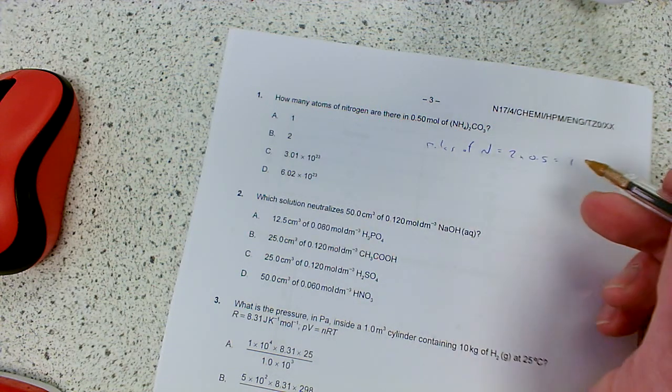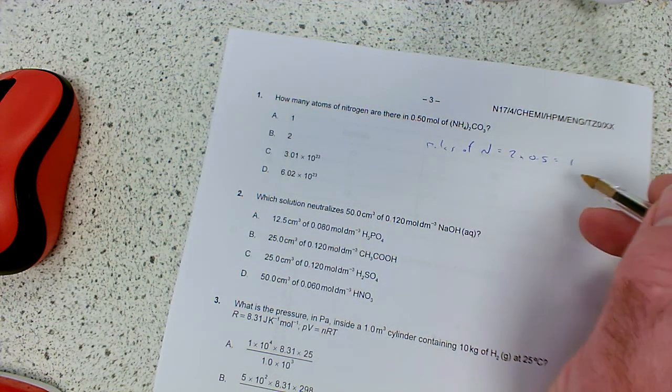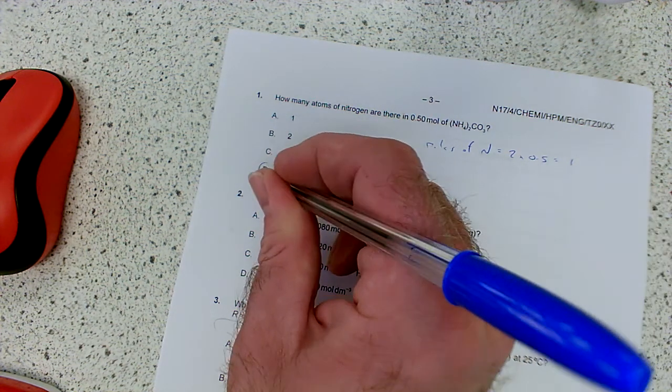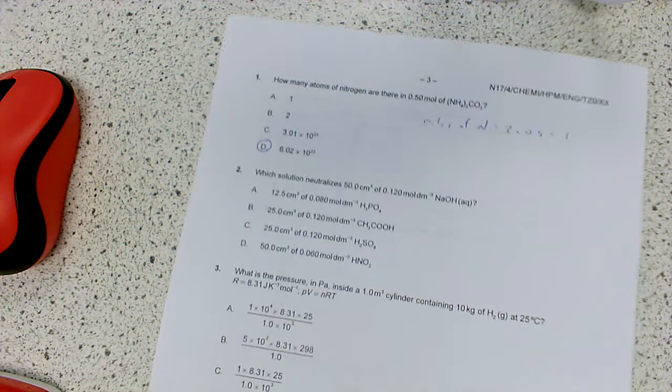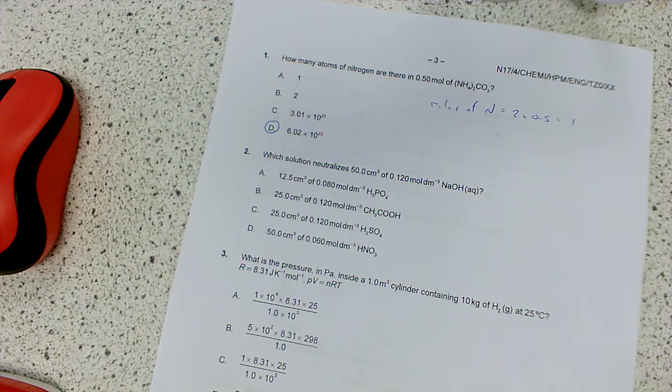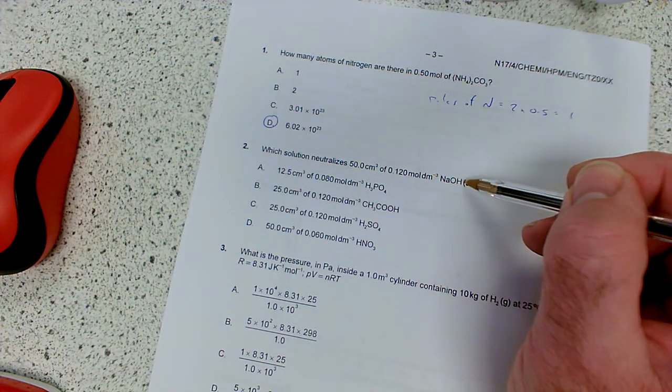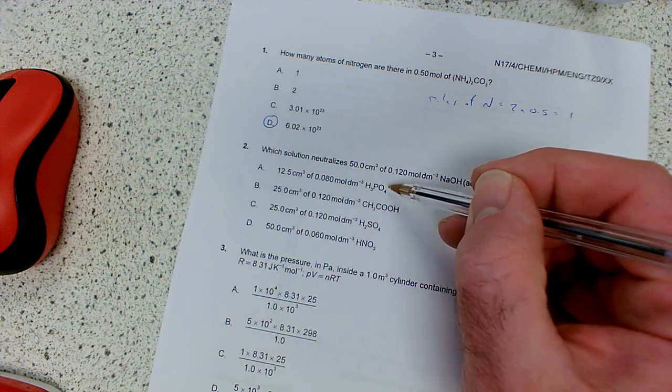So how many atoms are there then? Well, it's basically Avogadro's constant, 6.02 times 10 to the 23, times the number of moles, which is 1. So 1 times that is D. So you've got a mole of nitrogen atoms. Which solution neutralizes 50-70 cm3 of 0.12 molar sodium hydroxide? And we've got various acids here. We've got a triprotic, two monoprotics, and a diprotic.